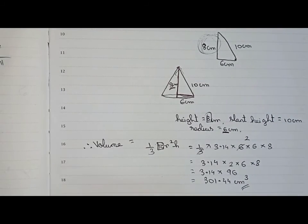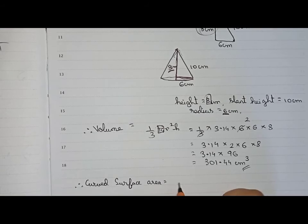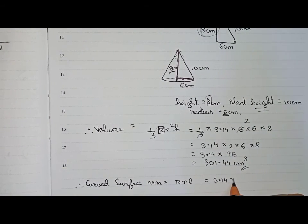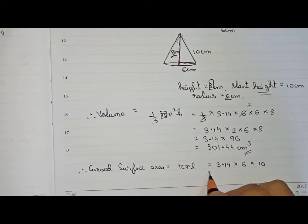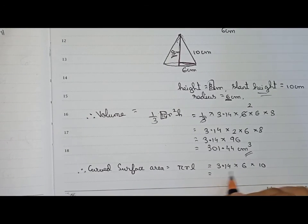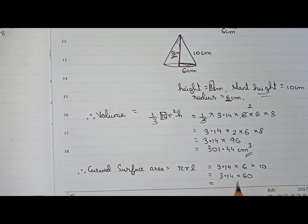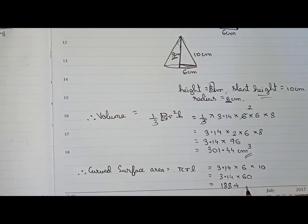Now we find the curved surface area. The formula for curved surface area of a cone is π × r × l, where l is the slant height. So that is 3.14 × 6 × 10, which gives 3.14 × 60 = 188.4 cm². This is the curved surface area.